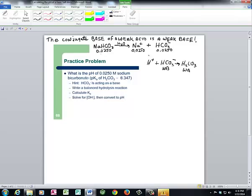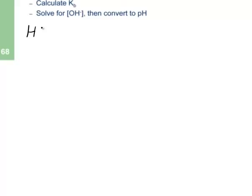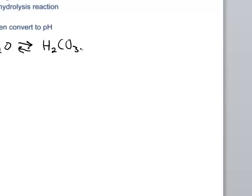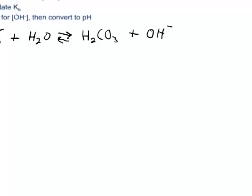Now that we've determined this salt will produce a basic solution, we can write the key reaction for our ICE table to calculate pH. The bicarbonate anion acts as a Brønsted-Lowry base, accepting a proton from water. This sets up an equilibrium: HCO3- + H2O ⇌ H2CO3 + OH-. Every time it takes a proton from water, it leaves behind hydroxide ion. The increase in hydroxide ion concentration makes the solution basic.